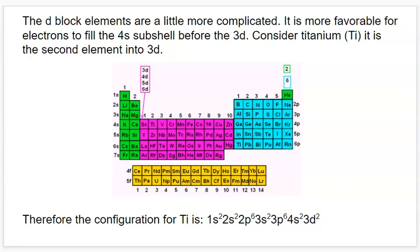That is all I have to talk about for electron configurations. I know this is going to seem really complicated at first, but we're going to do some more practice with this next class. You're going to start to see the patterns, because it's really important to know how all of the electrons are arranged — it has a large impact on both the physical and chemical properties of each element. Hopefully this was at least somewhat helpful, and I'll see you next class. Thank you.